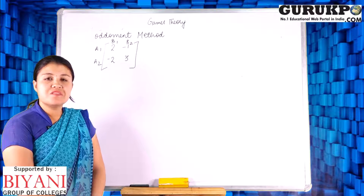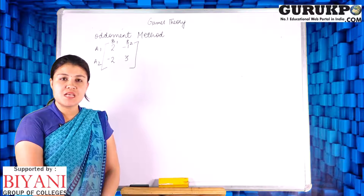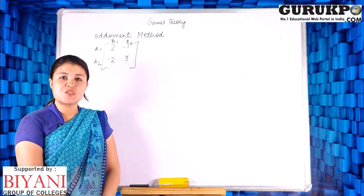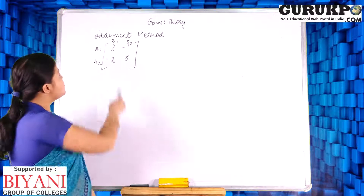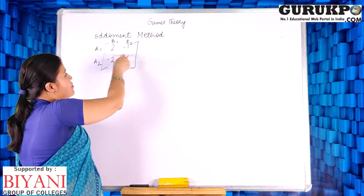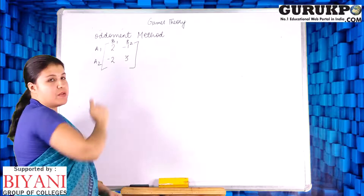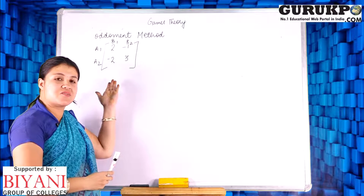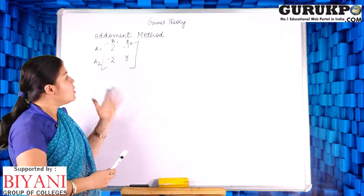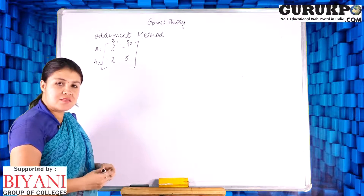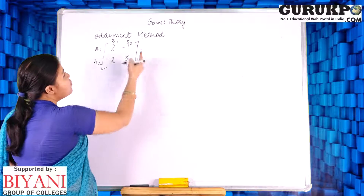The first condition to use the Oddment method is that your matrix must be in a 2×2 form — that is, there must be two row elements and two column elements. In our question, the matrix is already in 2×2 form. Now, let's see how to solve it.